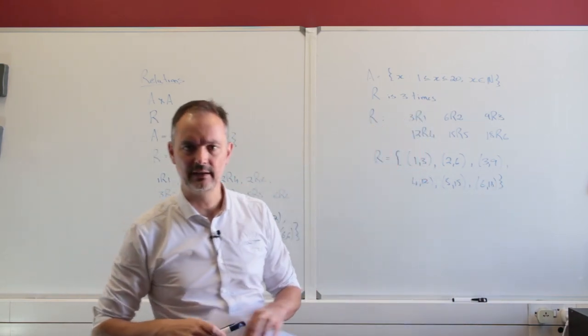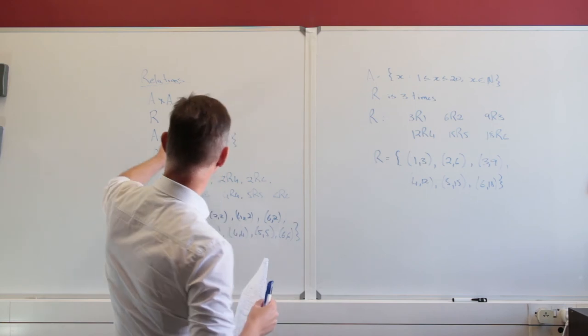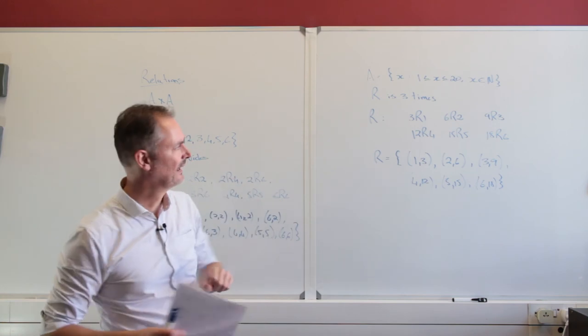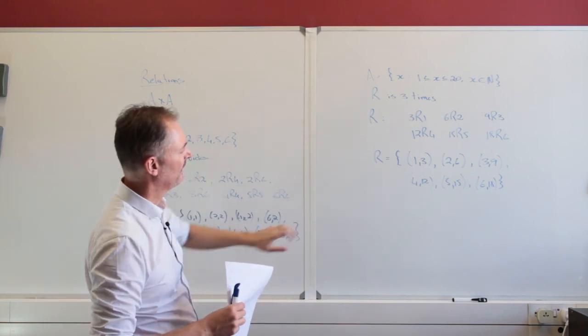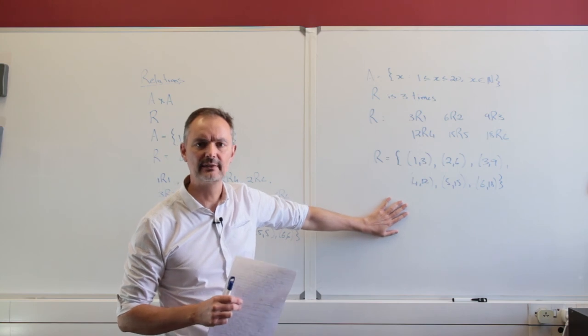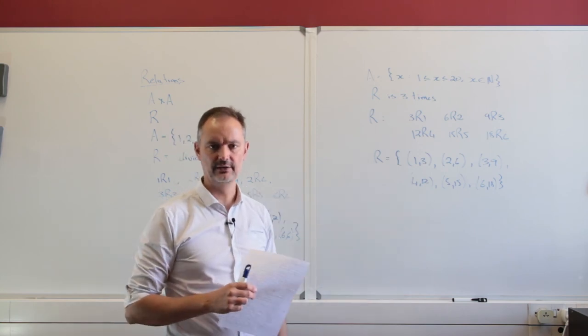So that is a binary relation. We are dealing just with 2, just from A onto itself. So the product set A and A. And we have this binary relation. Next up we're going to just look at some properties of these relations.